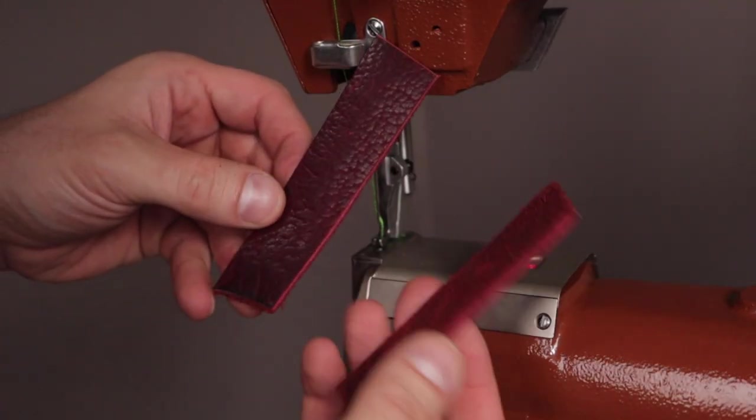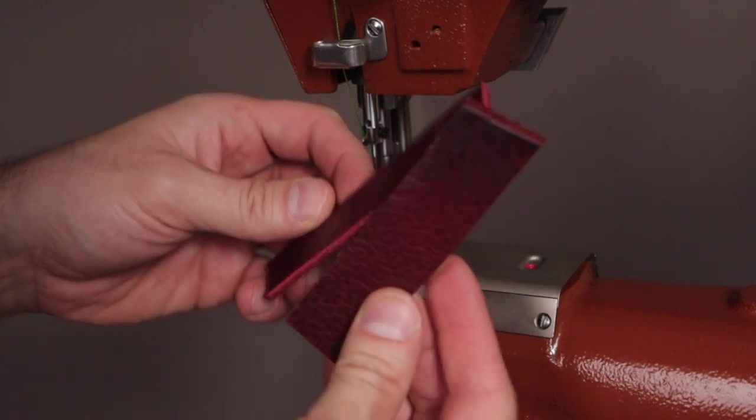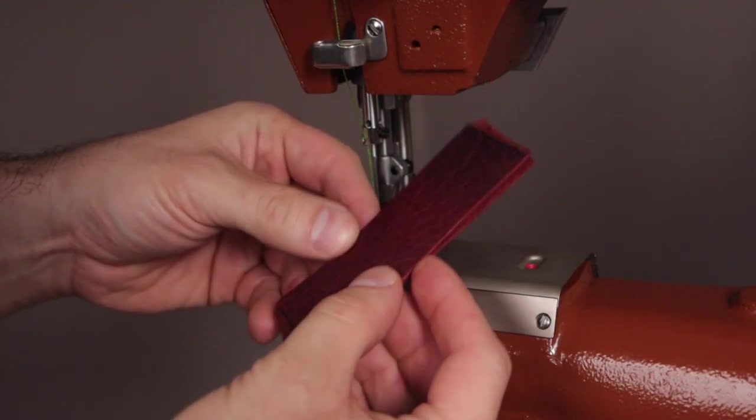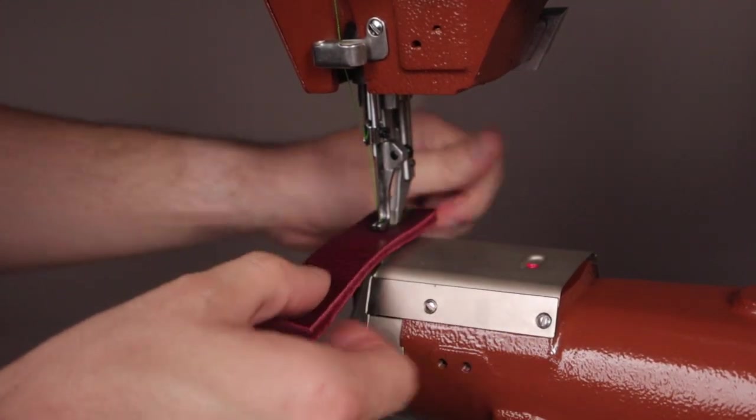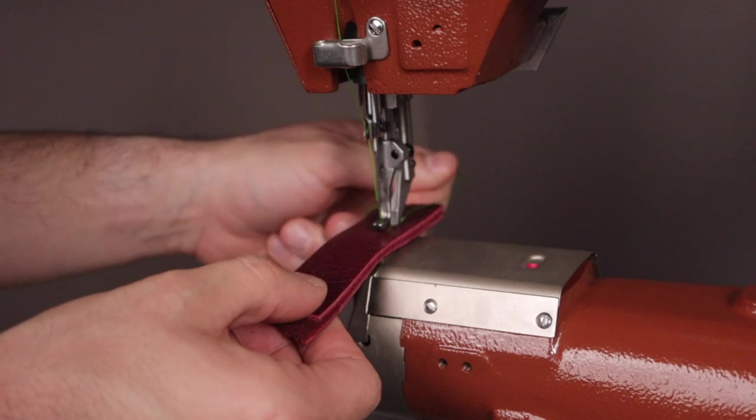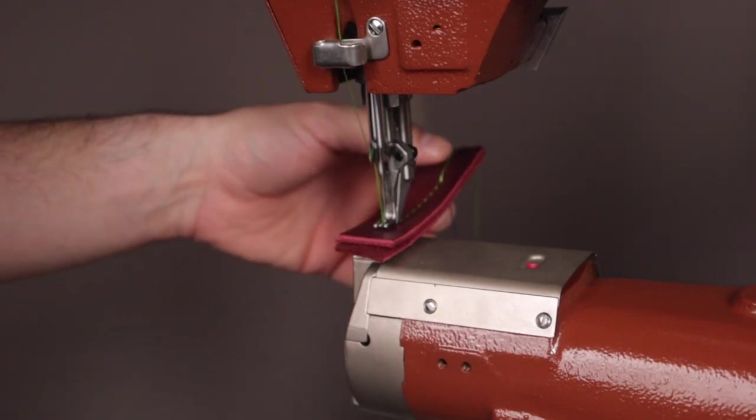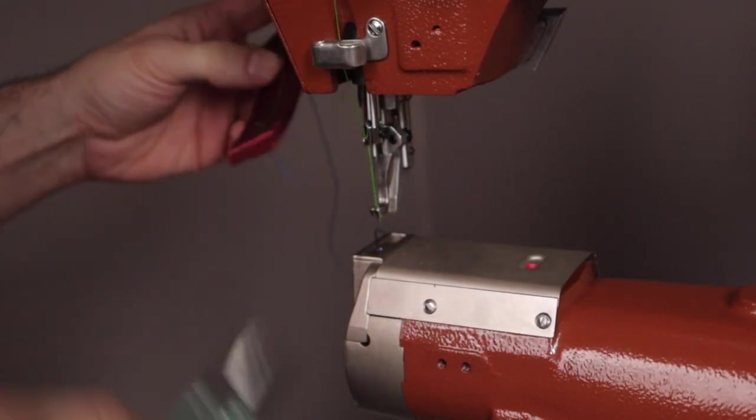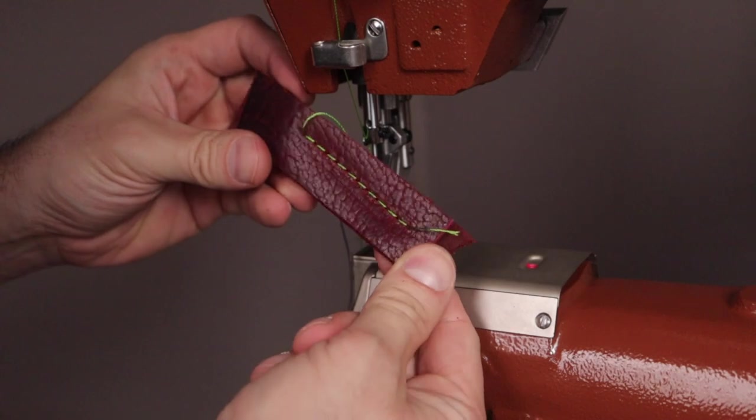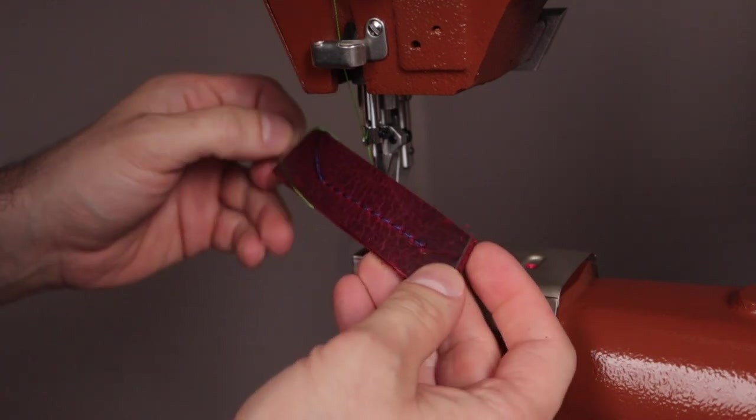Here we have two scrap pieces of leather that we are going to test our stitching on and see if the needle and hook timing completes the stitch properly. Don't forget to hold your thread for the first few stitches as you begin sewing. There you have it, completed stitches in a perfectly timed Cobra Class 26 sewing machine.